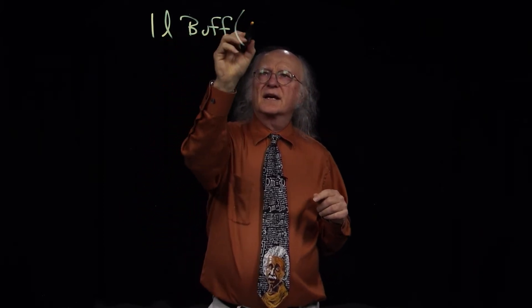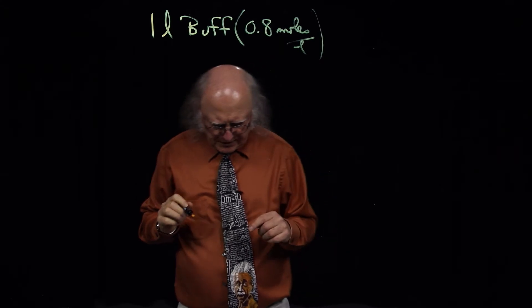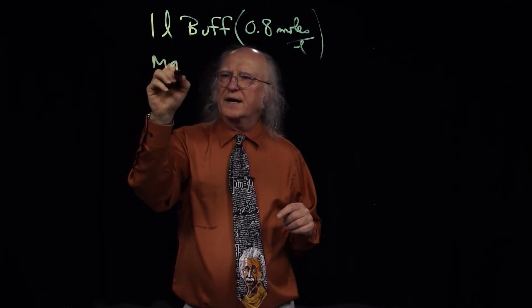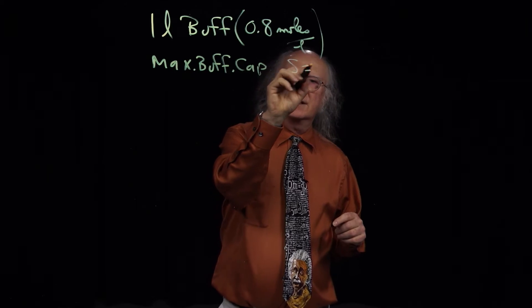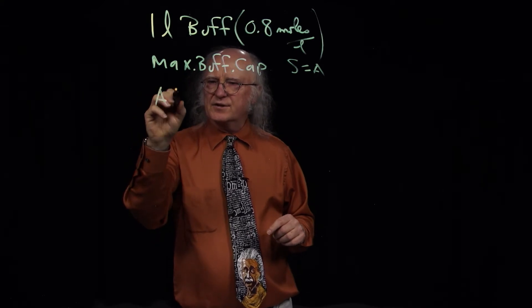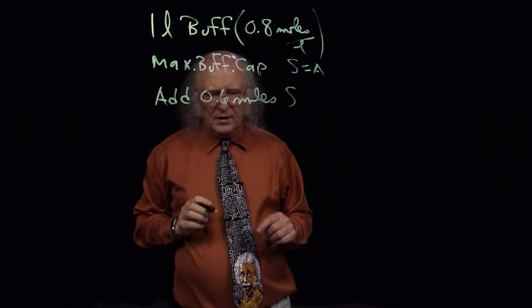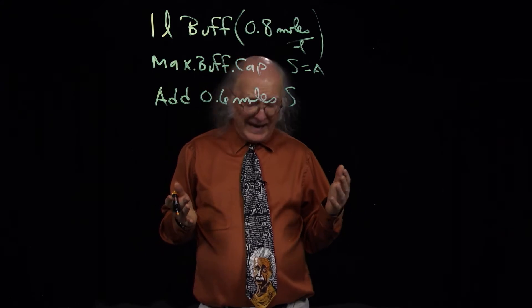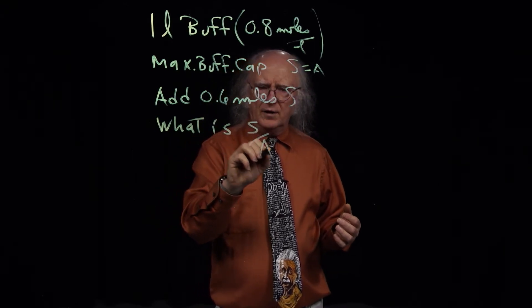Problem number 12 throws a little bit of a curve ball. I have one liter of a buffer at 0.8 moles per liter concentration, at maximum buffering capacity, so salt equals acid. To this solution I add 0.6 moles of salt. What is the new S over A?